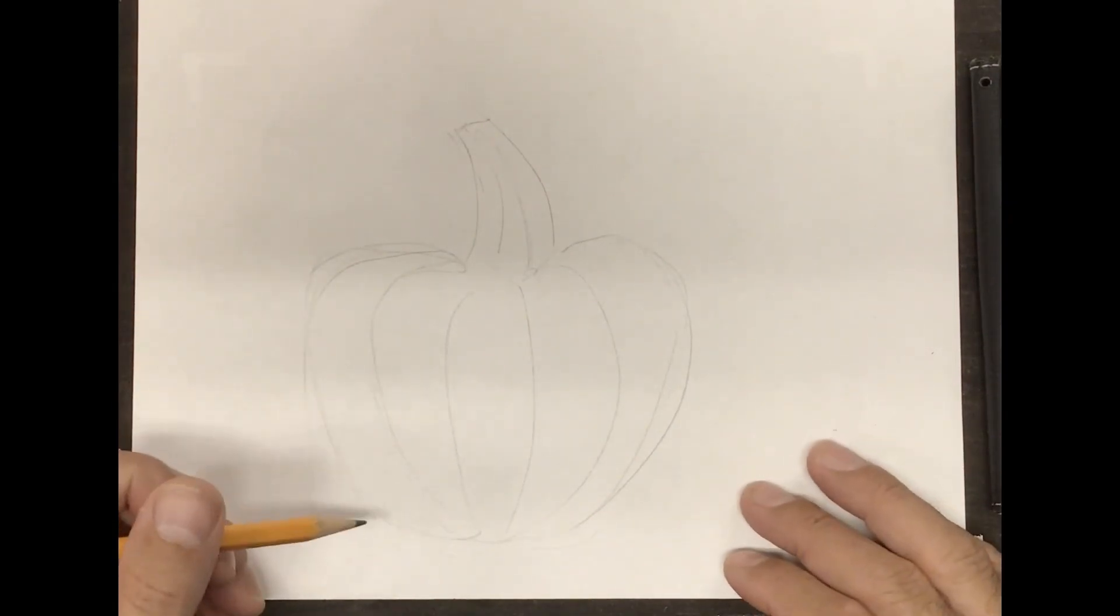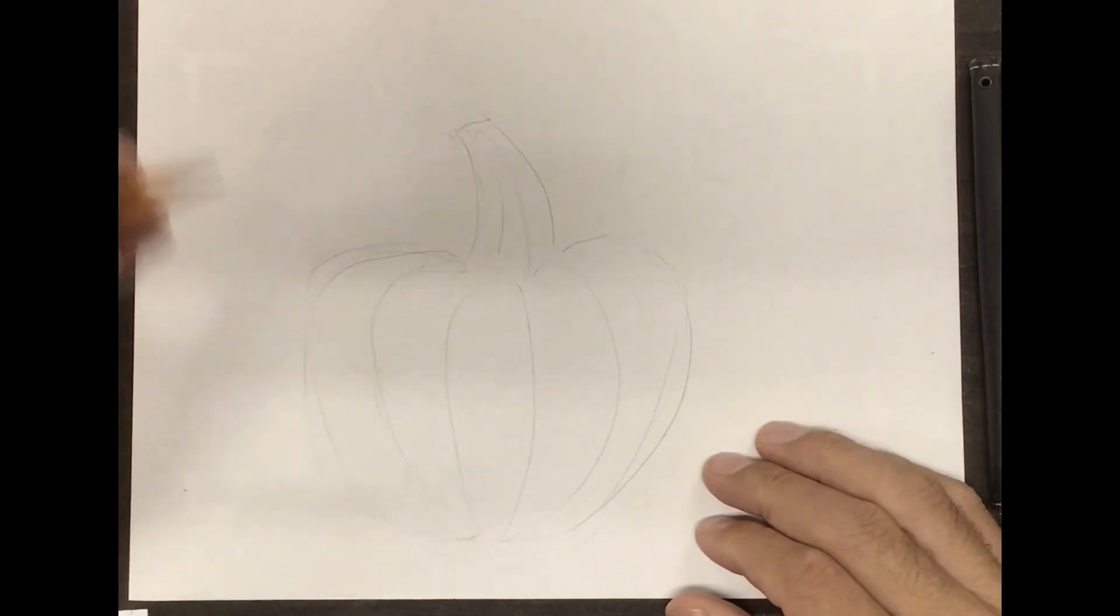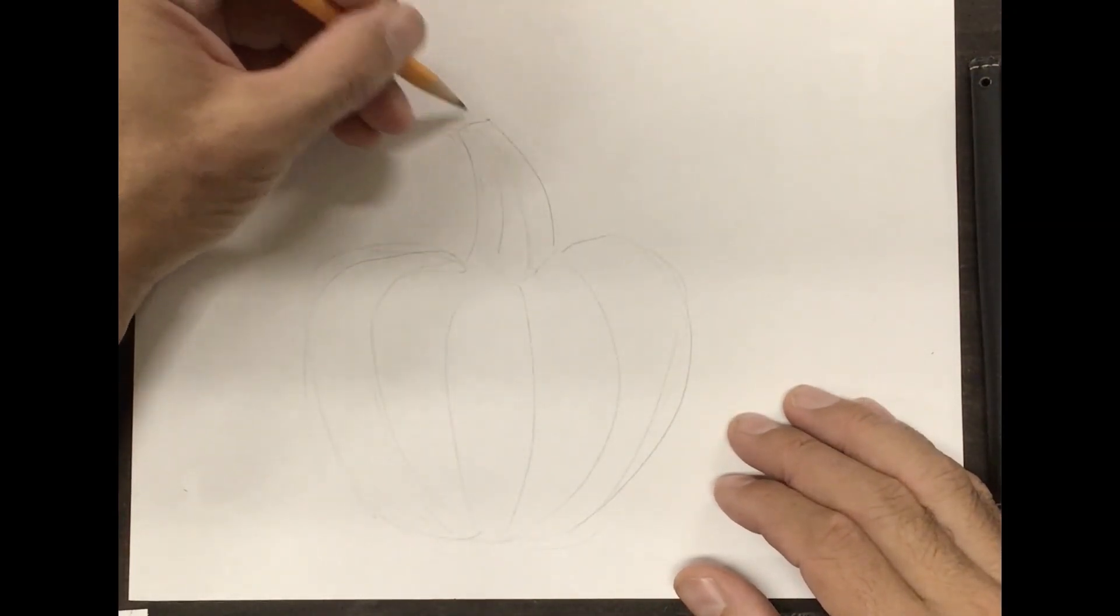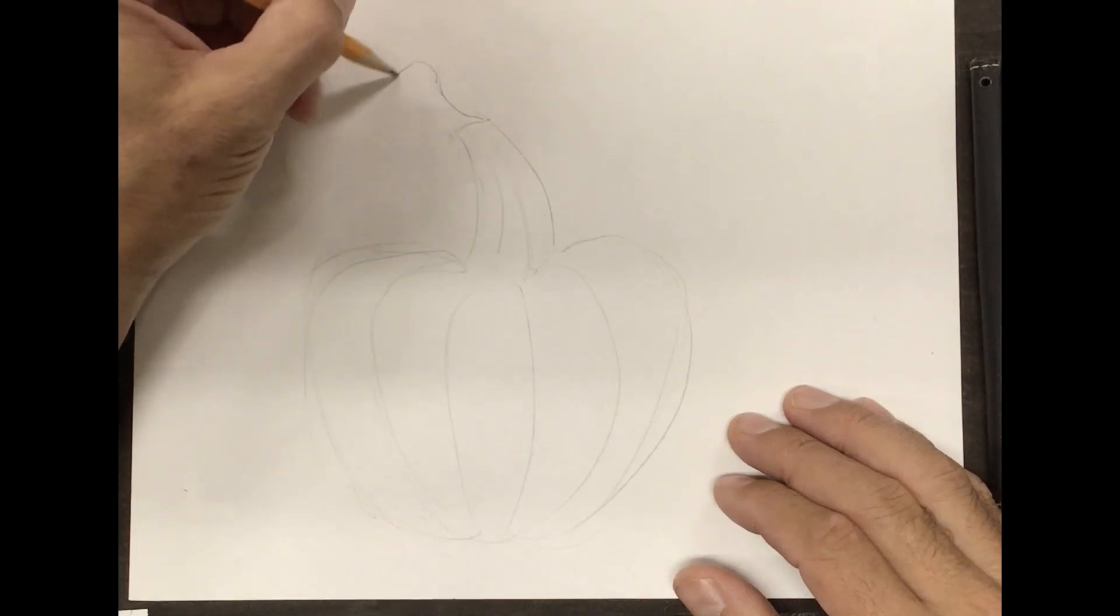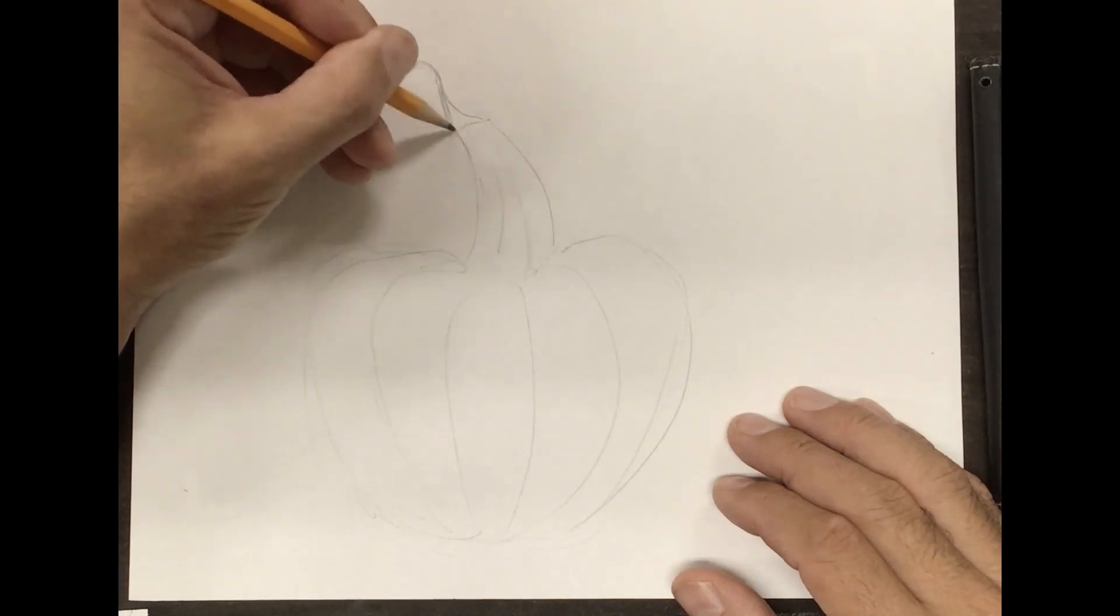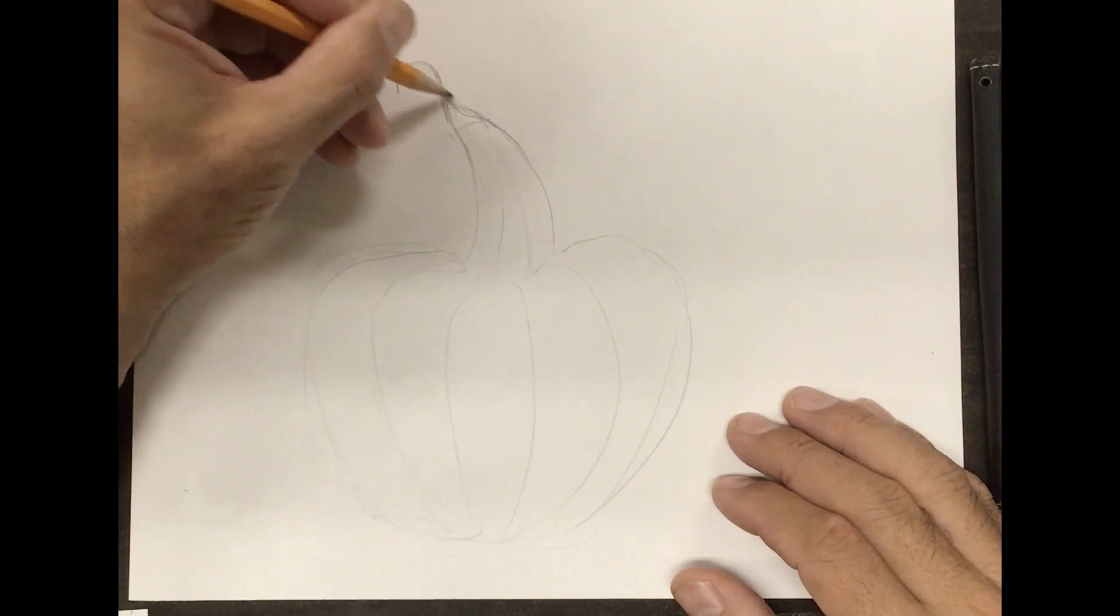And where it's gonna start and finish. So I think I'll have it kind of start out here and the vine is kind of shriveled up at the end, so it's a little bit more natural.